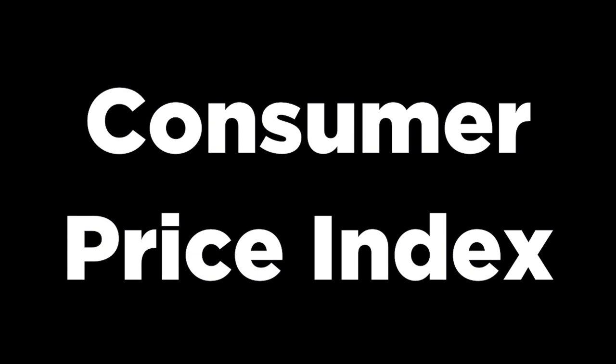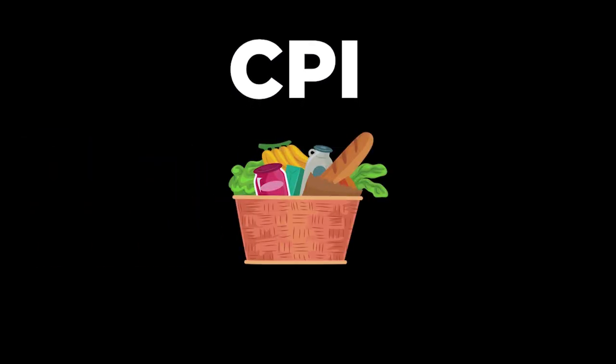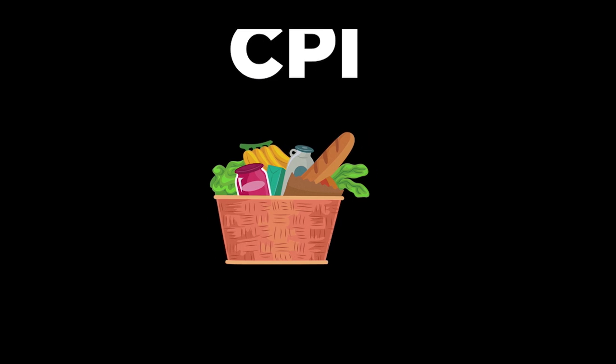Instead, central banks use the consumer price index, also called the CPI. The CPI is a flawed indicator, yet is the most commonly accepted indicator to measure inflation and its effects on prices. The CPI follows the price of a basket of products that are consumed by people. This in essence is the way an indicator like this one should work, but the CPI is flawed because of the way this basket of products is selected.